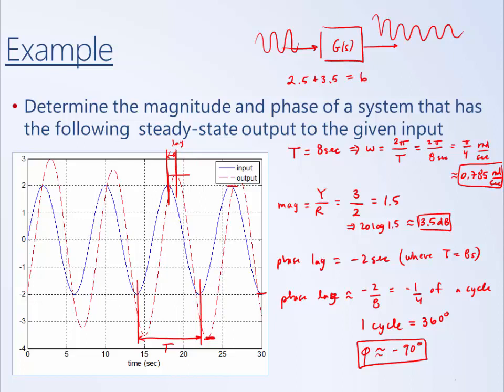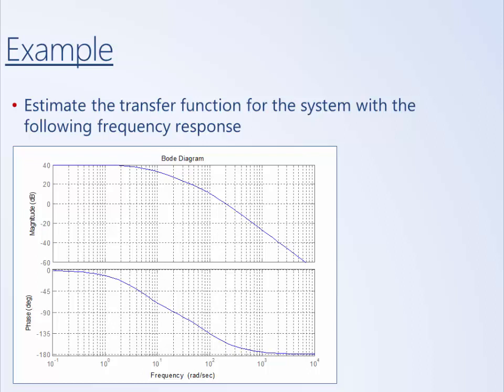We've now got one point on the phase plot. We would then repeat this process for a whole range of frequencies, plotting point by point and filling out this Bode diagram to capture the system's behavior across the range of frequencies of interest. We'll try to point out some of the advantages of employing a frequency response approach to system identification rather than using a step response.